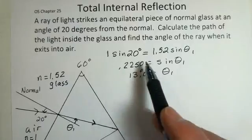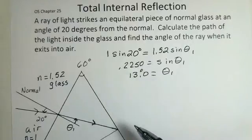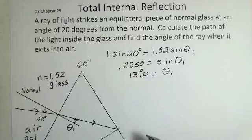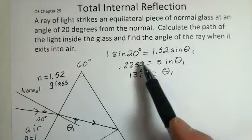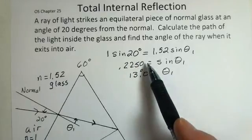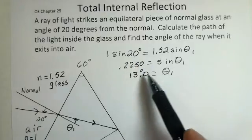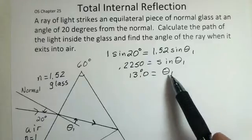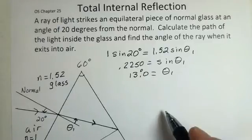You should check this with your calculator — press pause and do your own calculations. Sine of 20 divided by 1.52 produces this number, and taking the inverse sine of both sides gives an angle of 13 degrees. Let me know if you get a different result.